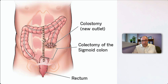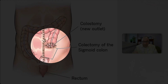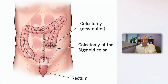In Hartman's procedure, the end of the descending colon is brought out as a temporary end colostomy, and the stump of the rectum is oversewn and left in the pelvis. The dust is allowed to settle for a few weeks — waiting for infection to clear, the patient to stabilize, and the pathology to be known. Then at a later date, they come back and re-anastomose the distal descending colon back to the rectum, thereby re-establishing bowel continuity and reversing the colostomy. It's a colostomy in the left iliac fossa, flush with the skin — a temporary end colostomy.